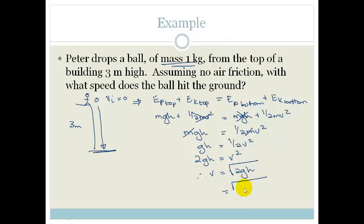Now let's substitute in our numbers. So we've got 2 times 9.8 because that's the gravity on Earth. And we assume that Peter's on Earth. And we've got the height of 3. So we pop that in our calculator. And we've got 2 times 9.8 times 3 equals square root it. And we get 7.67 meters per second. And it's asked for the speed. And speed is a scalar so we don't need to give a direction. So that is the answer.